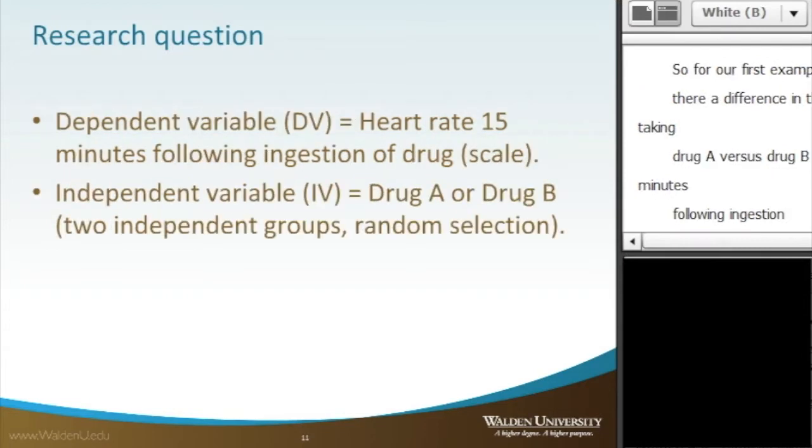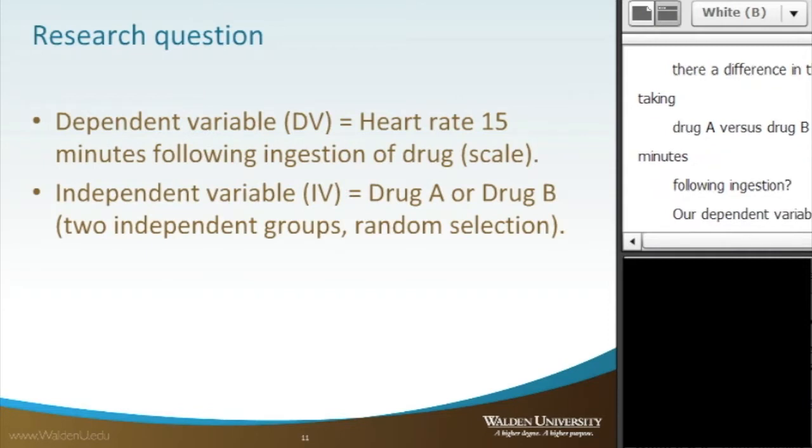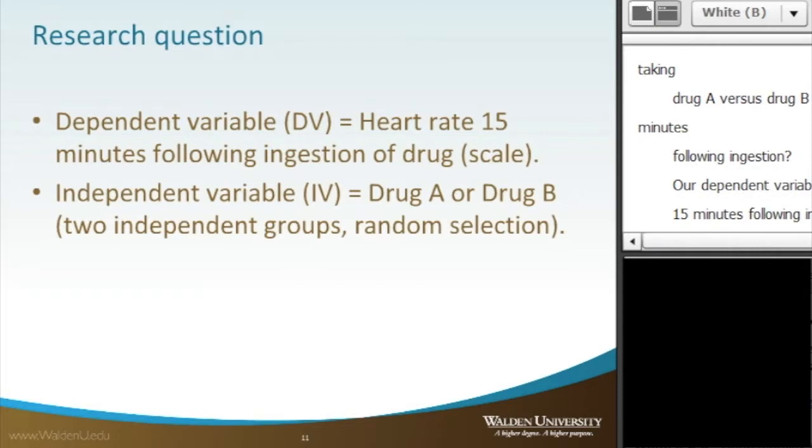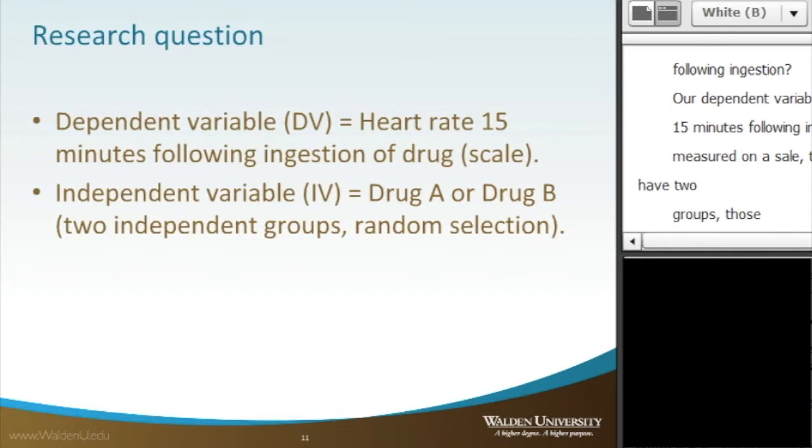Our dependent variable is heart rate 15 minutes following ingestion of the drug, which is measured on a scale. The independent variable is the two groups: participants that took drug A or those that took drug B. They're randomly selected.